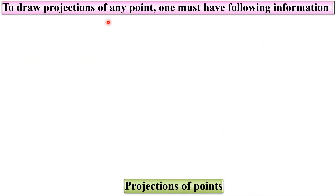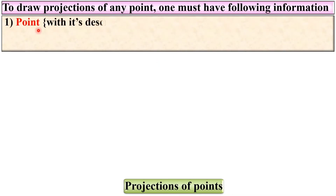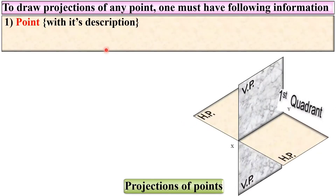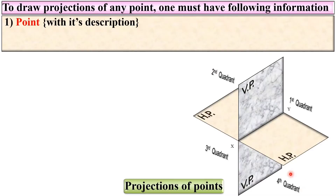First of all, to draw the projections of any point one must have the following information. First, the point — that means with its description with respect to HP and VP — like as first quadrant, second quadrant, third quadrant, or fourth quadrant.